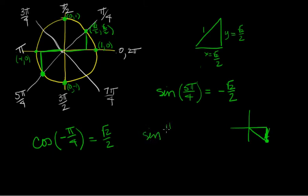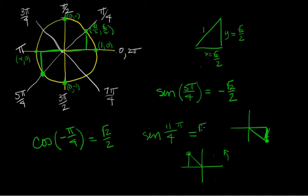How about the sine of 11 pi over 4? I draw my little axis and count around by pi over 4, going counterclockwise: 1, 2, 3, 4, 5, 6, 7, 8, 9, 10, 11 — right here. My x is negative, my y is positive. I want y because it's sine, so it's the square root of 2 over 2. I went around the circle more than once, but I know the pi over 4's — I just count around, even to this day I don't have these memorized.